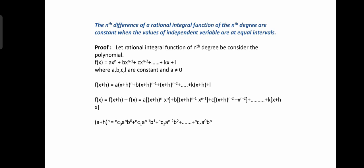Why a ≠ 0? Because if we take a = 0, then we can't find the value of the nth degree polynomial. Then we define f(x+h) = a·(x+h)^n + b·(x+h)^(n-1) + c·(x+h)^(n-2) + ... + k·(x+h) + l, where h is the interval of differencing. By definition, del f(x) = f(x+h) - f(x).